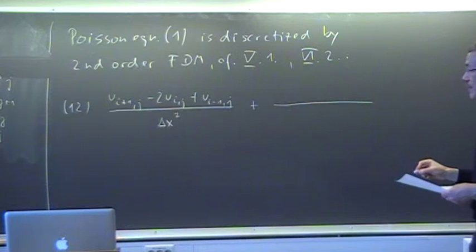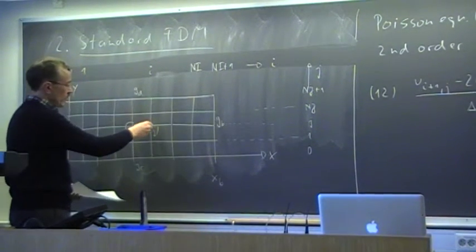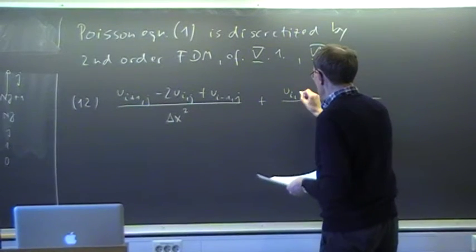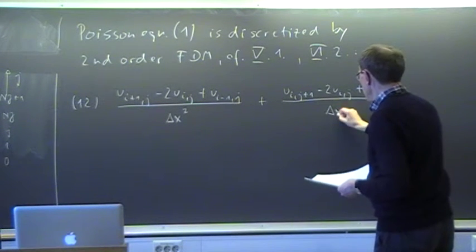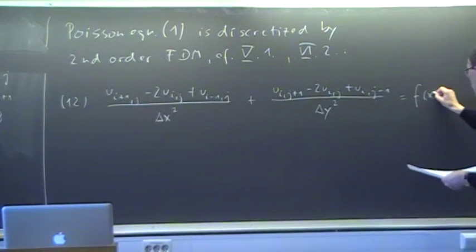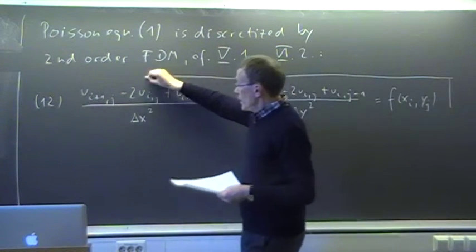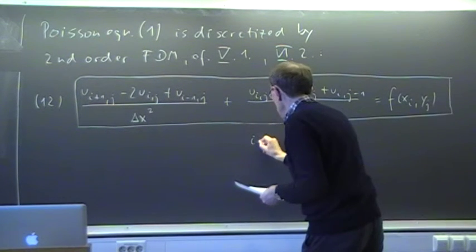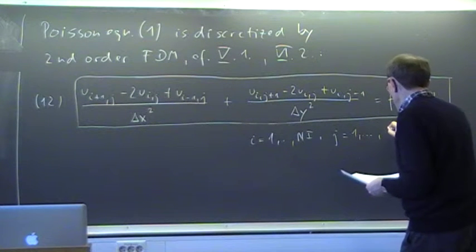For the second derivative of u with respect to y, we do a similar thing. We go along the j line and take j+1, j, and j-1 into account, while the i index is unchanged. This gives u_{i,j+1} minus 2u_{i,j} plus u_{i,j-1}, divided by delta y squared. On the right-hand side we have function f evaluated at grid point (x_i, y_j).